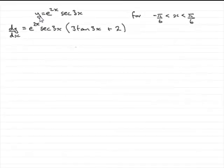Now, we're told then that this curve, y equals e^(2x) sec(3x), has a minimum turning point for x somewhere between minus π/6 to x being less than π/6.